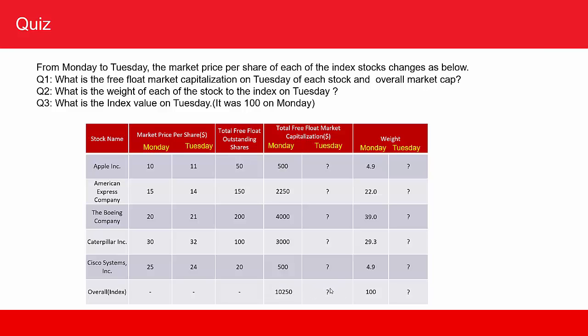I've put a question mark on the overall market capitalization — that will be different compared to Monday — and correspondingly the index value will change, just the way when the components of the Dow Jones Industrial Average change their price, the value of the Dow Jones changes. Three things are going to change: free float market capitalization, weights, and the index value — but the overall weight will always remain 100. You can pause here, answer the three questions yourself, and then go to the next slide to verify if you got them right.